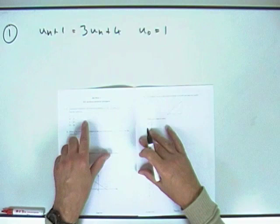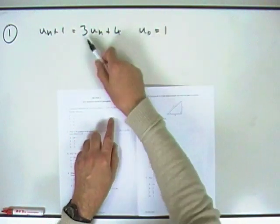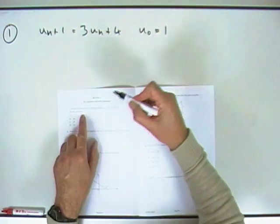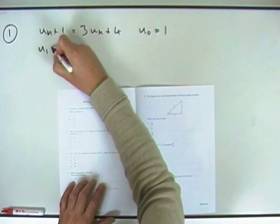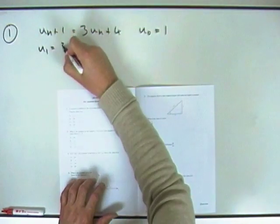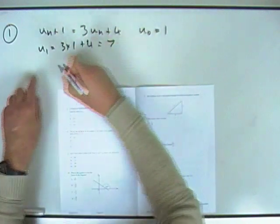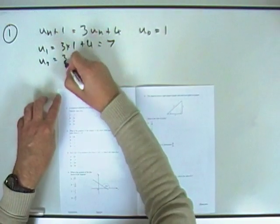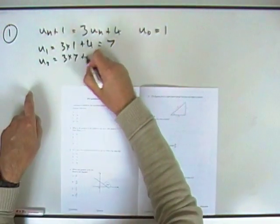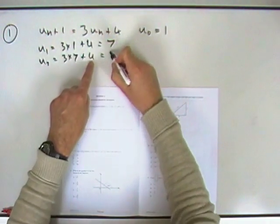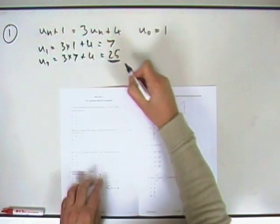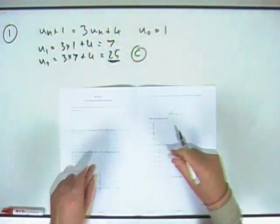The question gives you an initial value, a little rule to work it out. You have to work out U2. You're at U-not just now, so you need to get to U1 first. So it'll just be 3 times what you've got plus 4. 3 and 4 is 7. Now there is 7, same pattern again, 3 times the 7 plus the 4. That's 21 and 4, that's 25. Answer 25, that would be C.